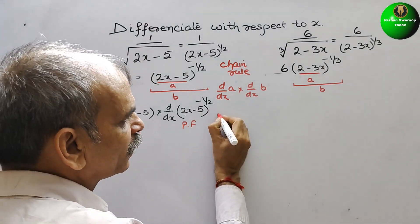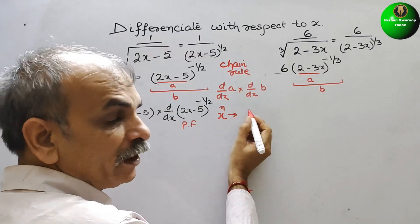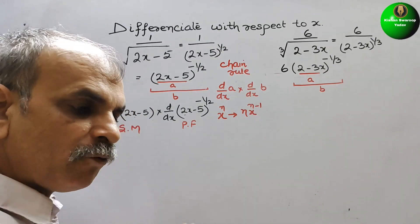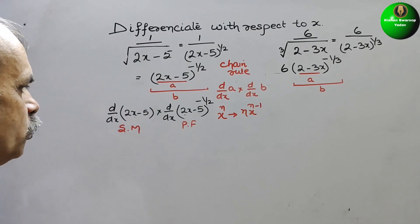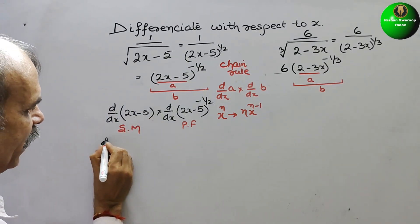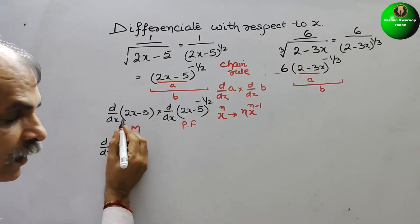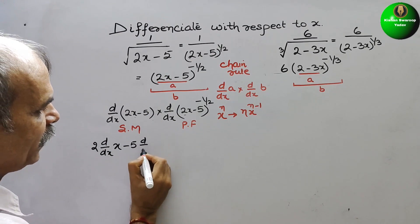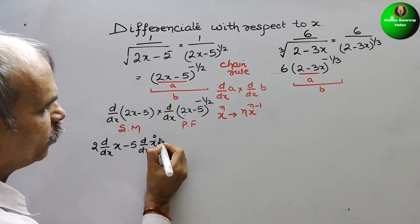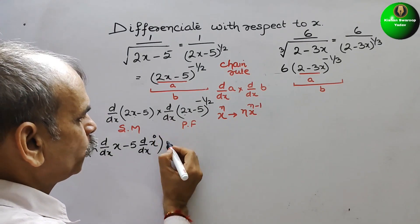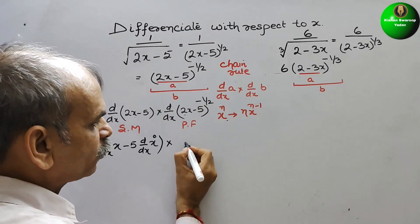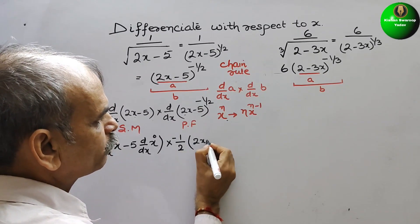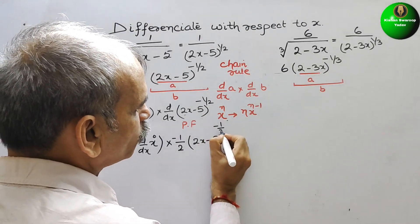This part goes for scalar multiple, and this goes for the power function. In the power function, if we get x to the power n, differentiating gives n times x to the power n minus 1. In the scalar multiple, we split it. So we get d by dx of 2x minus 5, and this is in the form of x to the power n. So we write minus 1 by 2, times 2x minus 5, to the power minus 1 by 2 minus 1.